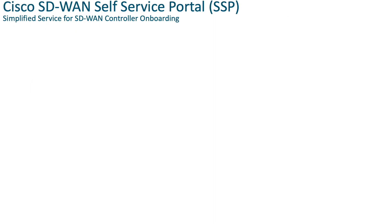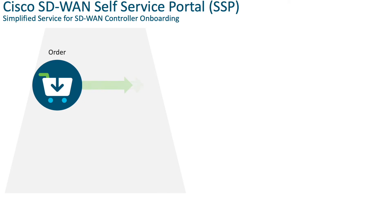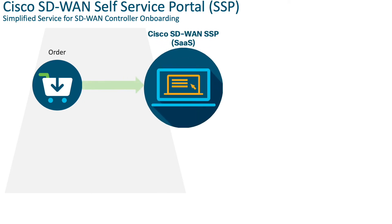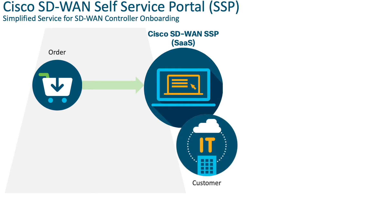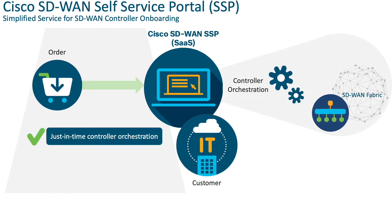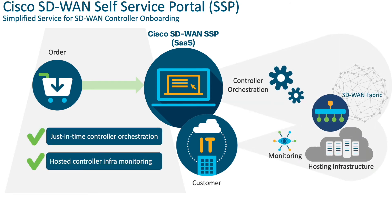To address these use cases, Cisco is introducing a SaaS-based service called Cisco SD-WAN Self Service Portal, or SSP. This service is a customized cloud infrastructure automation platform that streamlines cloud controller provisioning and infrastructure monitoring. Customers can provision SD-WAN controllers after ordering cloud subscriptions, with no dependency on the Cisco CloudOps team.